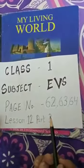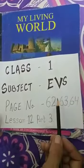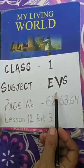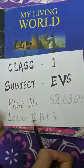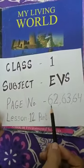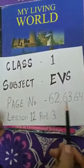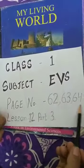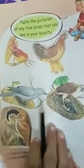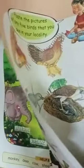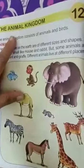Good morning students. Take out your EBS book, Lesson 12, page 62 to 64. The name of our chapter is The Animal Kingdom.